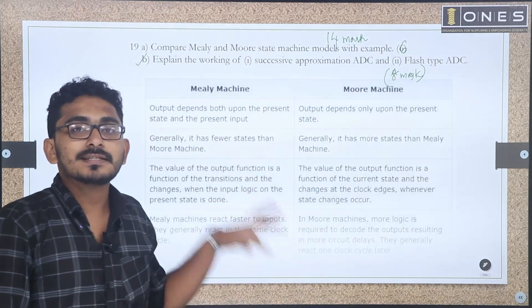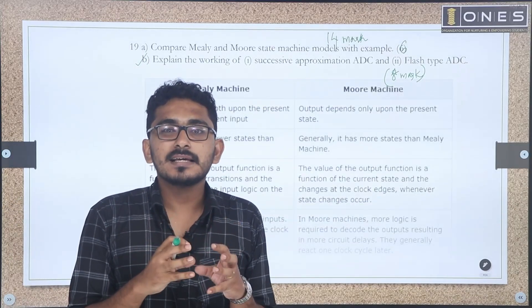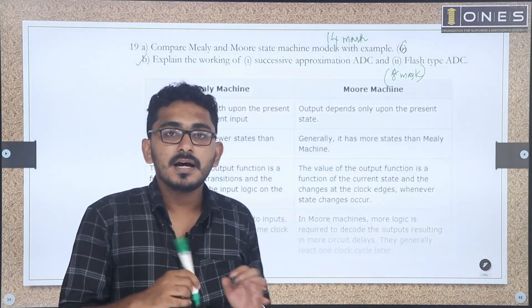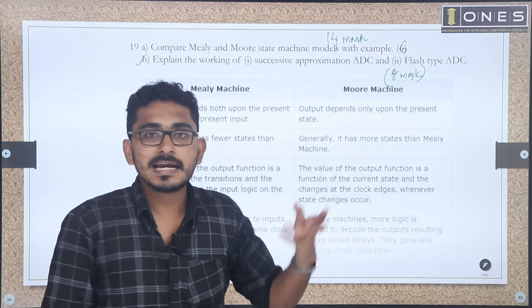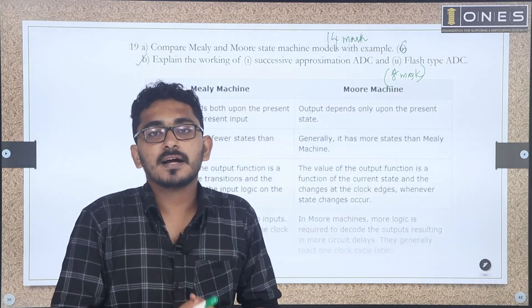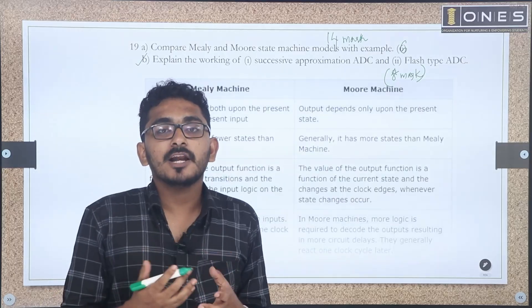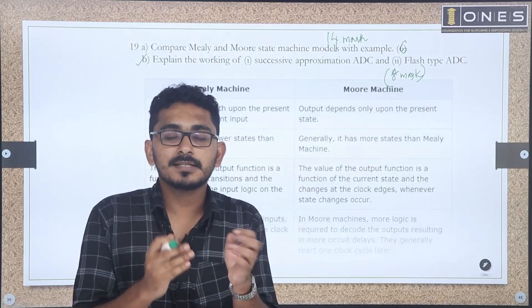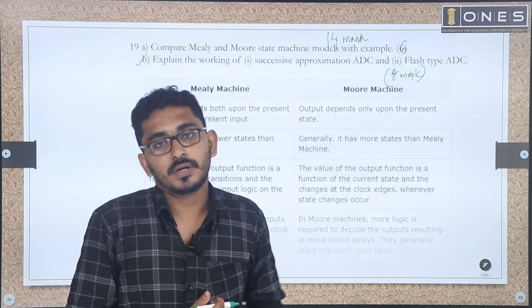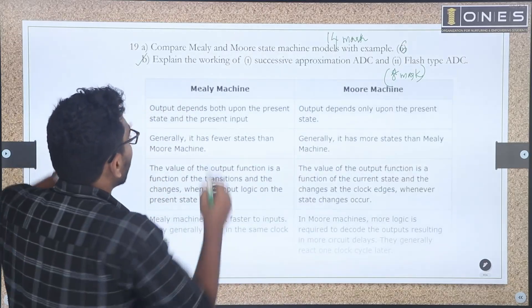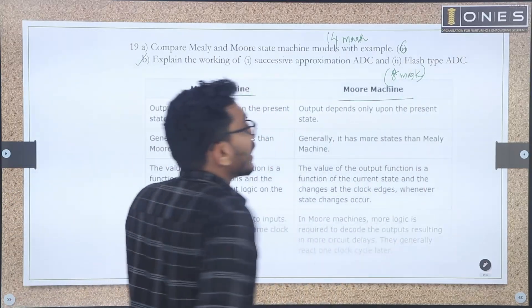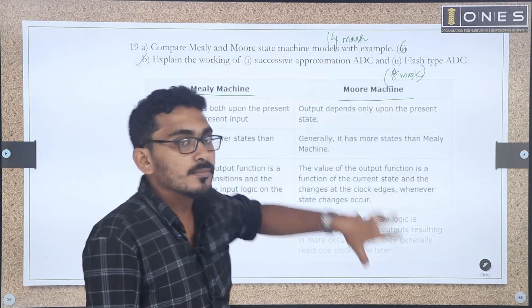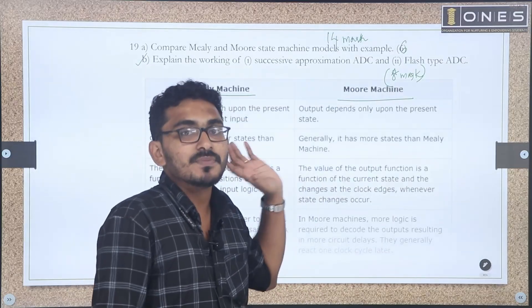Module 5 is a concise module with a couple of topics — state machine and the programming part of VHDL. If you study a few topics, you can score marks in this module. The first question is the comparison of the Mealy and Moore machines for 6 marks, split as 3 plus 3.